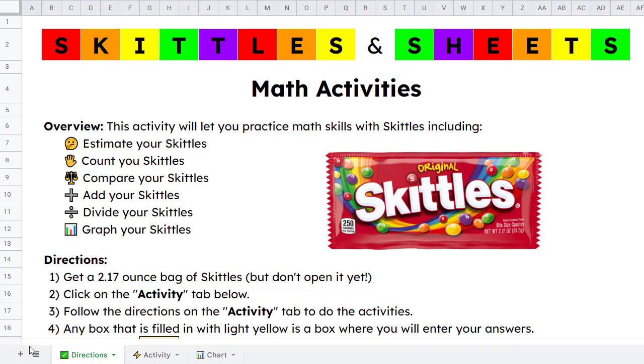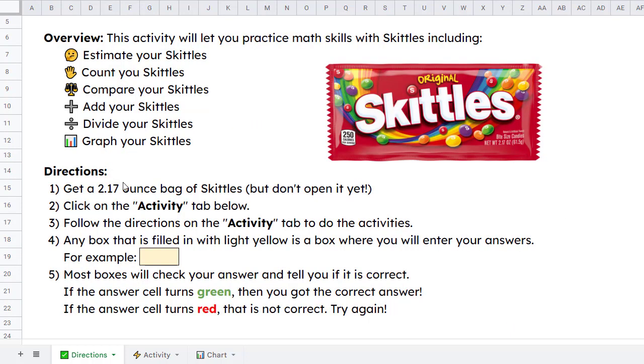The first tab on the sheet is the directions tab. Here you'll find some basic instructions for the project. These directions include getting a 2.17 ounce bag of Skittles, but not opening it yet. And I have mine right here, ready to do the activity as well. Next, you're to click on the activity tab down at the bottom and then follow the directions there to complete the activities. When we get over there, we'll see that any light yellow boxes are where we're going to fill in our answers. And most of those boxes will check your answer to tell you if it's correct or not. If the box turns green, then you got the correct answer. And if it turns red, then that is not correct. And you need to try again.